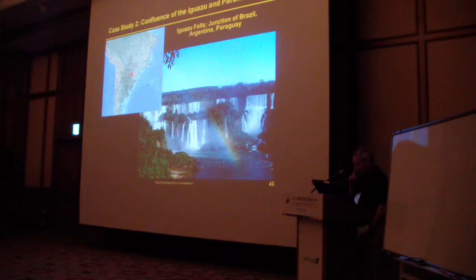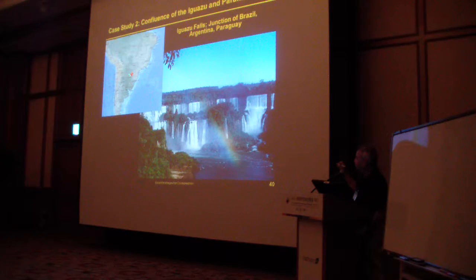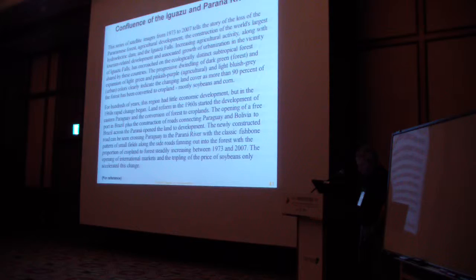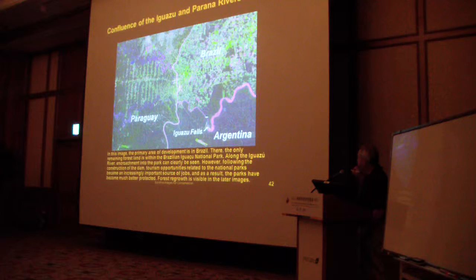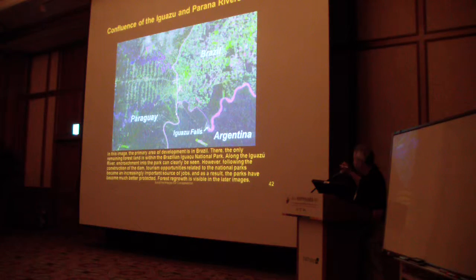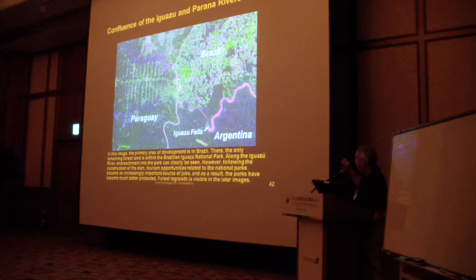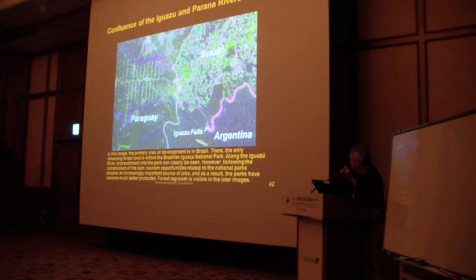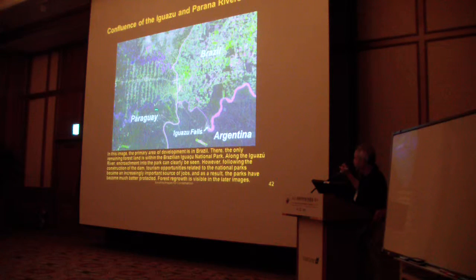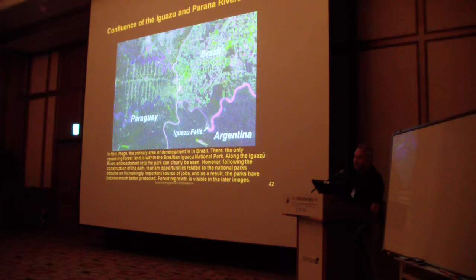Another area is around Iguazu Falls, right at the triple boundary of Argentina, Brazil, and Paraguay. In a 1973 satellite image, vegetation appears as dark green rainforest. The two rivers — the Parana and the Iguazu — form boundaries between the three countries. Argentina is to the south, Paraguay on the left half, and Brazil to the north. In 1973, there was lots of rainforest in Argentina and Paraguay, though they had already started putting in a trellis configuration of roads very typical of the Amazon — a main road through a forested area with perpendicular branch roads and farms along them, representing the start of clearing.